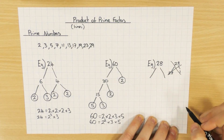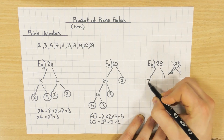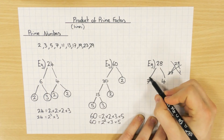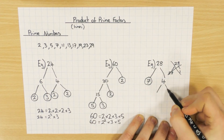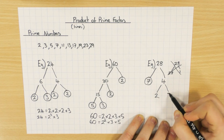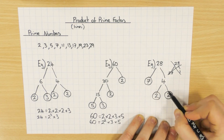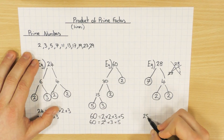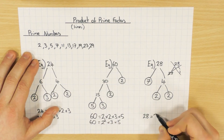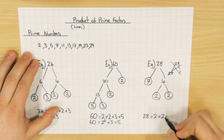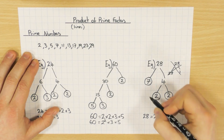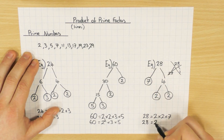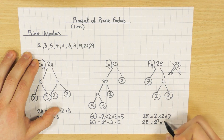Two numbers that multiply to get 28 — let's go with 7 and 4. 7 is a prime number, so I circle it. 4 isn't, so 2 times 2 makes 4, and 2 is prime and 2 is prime. Don't forget to write your answer out to get full marks. Writing them in order: 28 equals 2 times 2 times 7. And in index notation, 2 times 2 can be written as 2 squared, times 7.